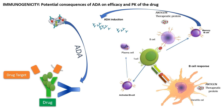The opposite can also be true. Some non-neutralizing anti-drug antibodies actually increase the time the drug remains in the blood by blocking the mechanisms by which the drug is excreted. This can produce better efficacy. In the PK data, you will see a cumulative increase in drug levels, because the previous dose was not excreted as expected based on the drug's half-life. The half-life of the drug is effectively being increased because of anti-drug antibodies.